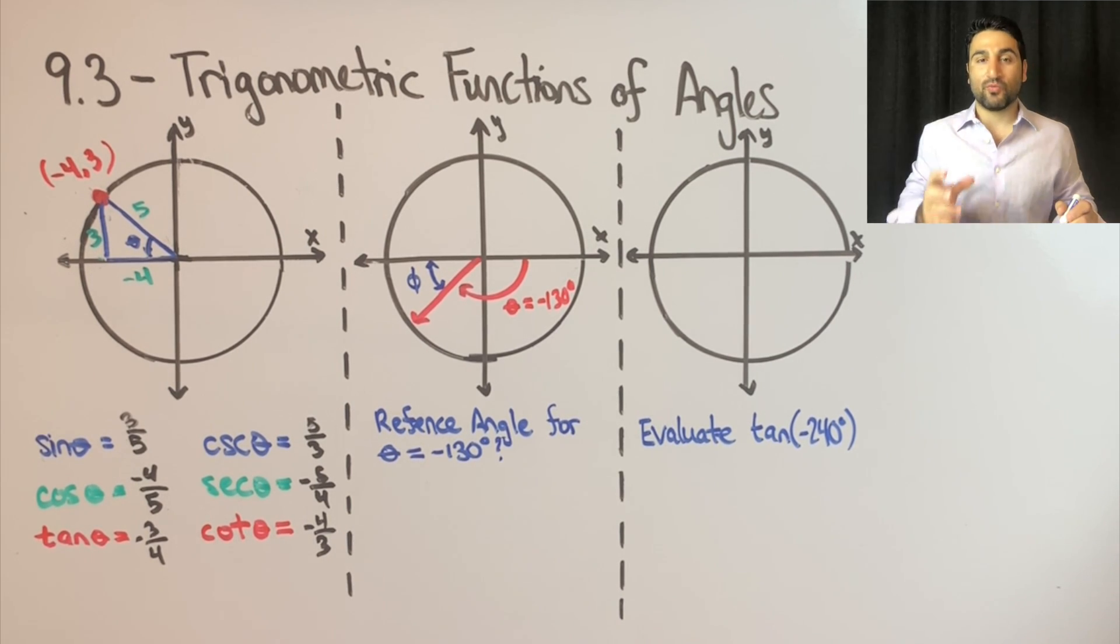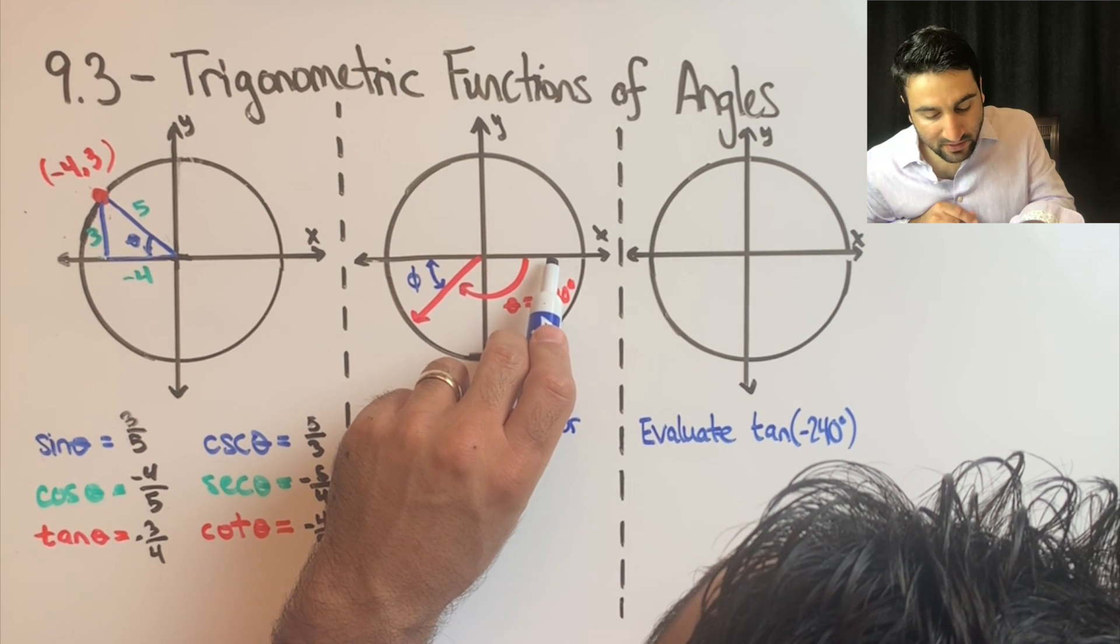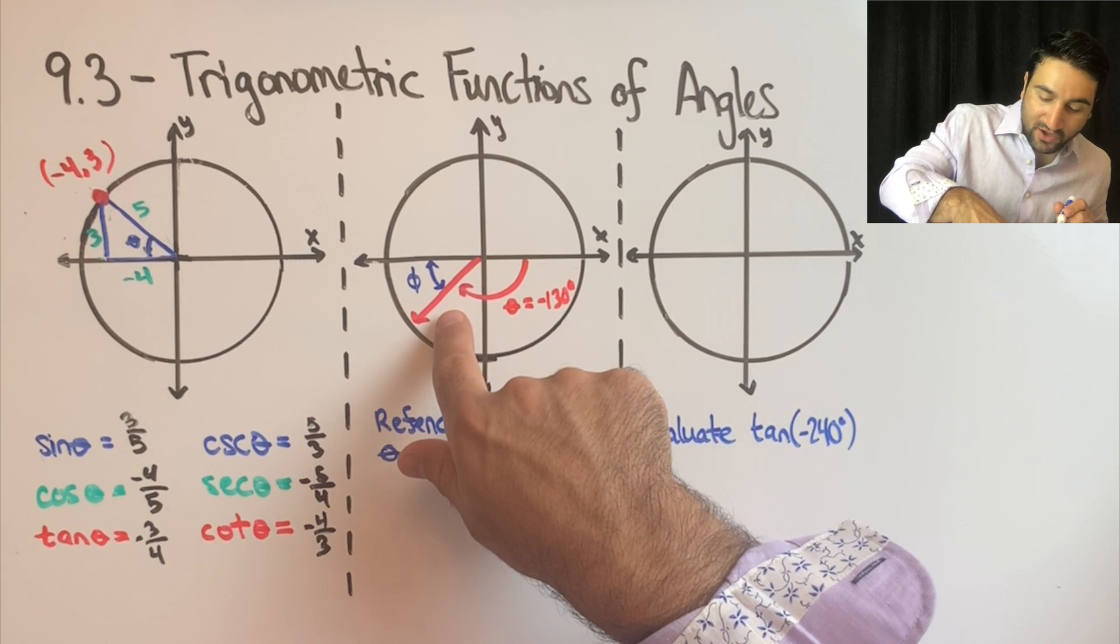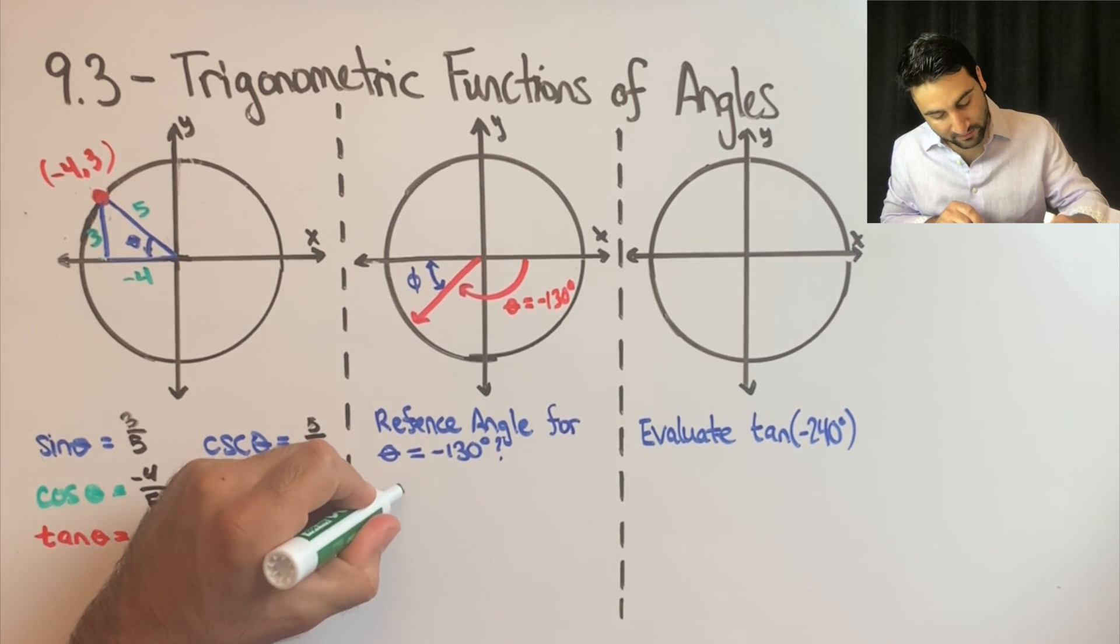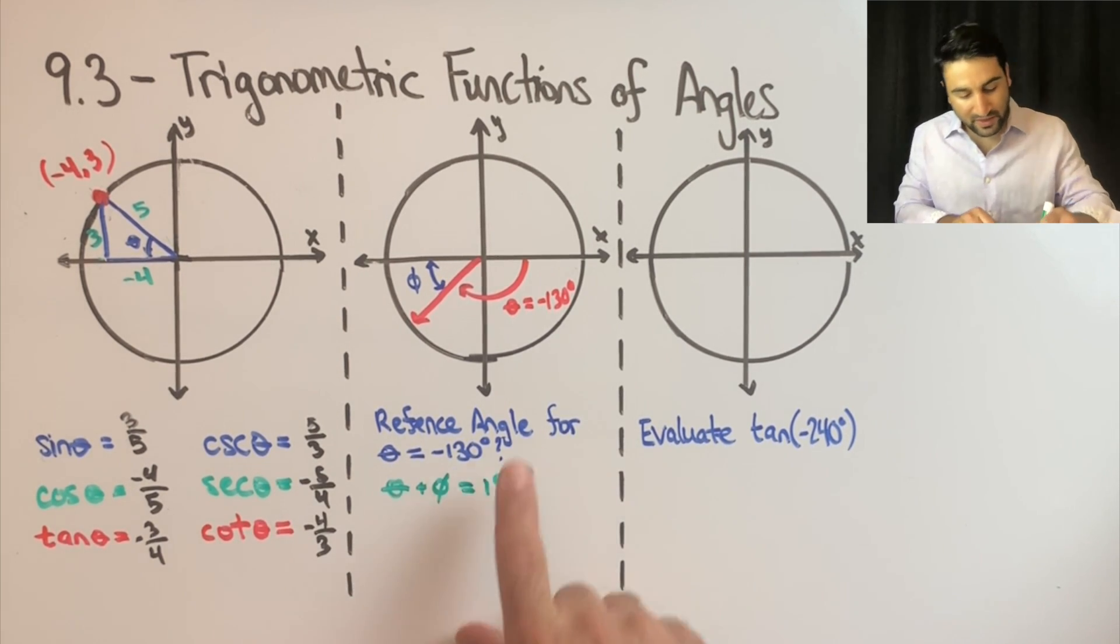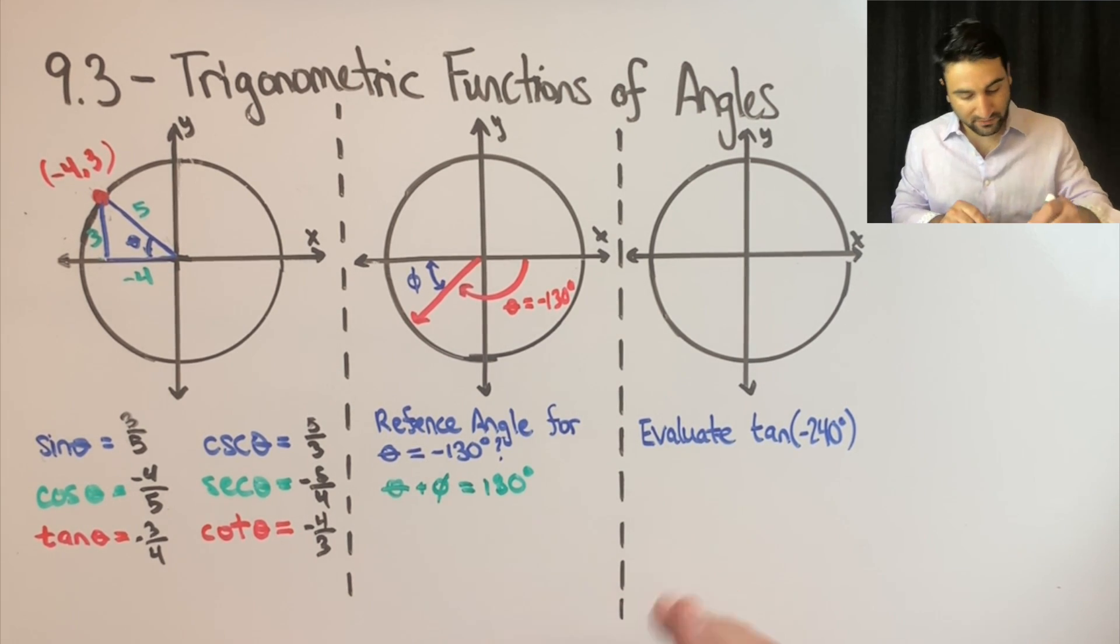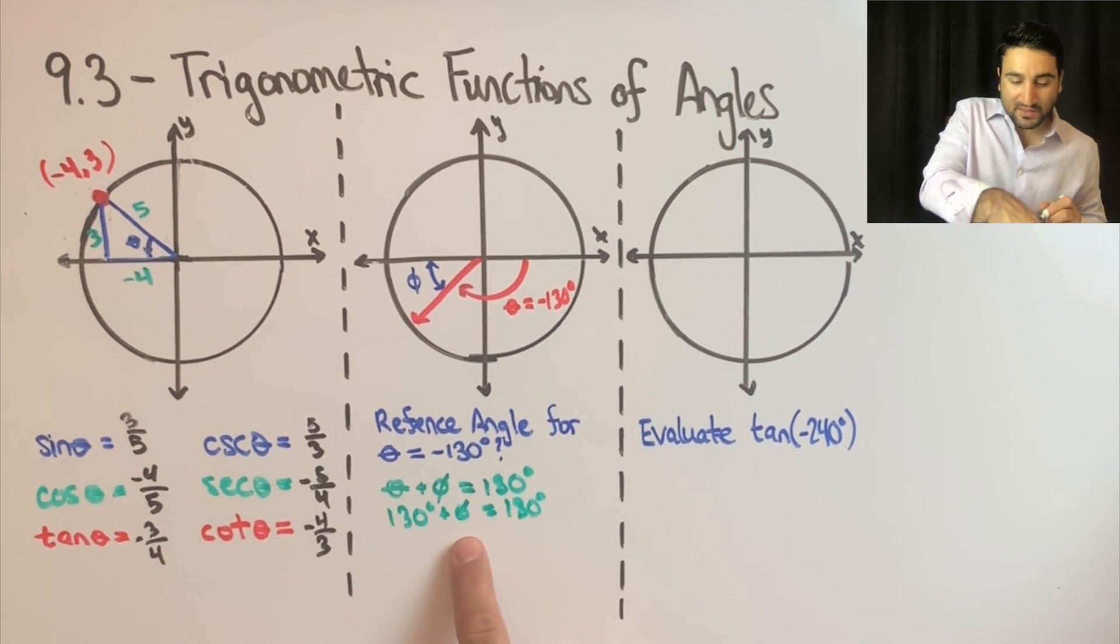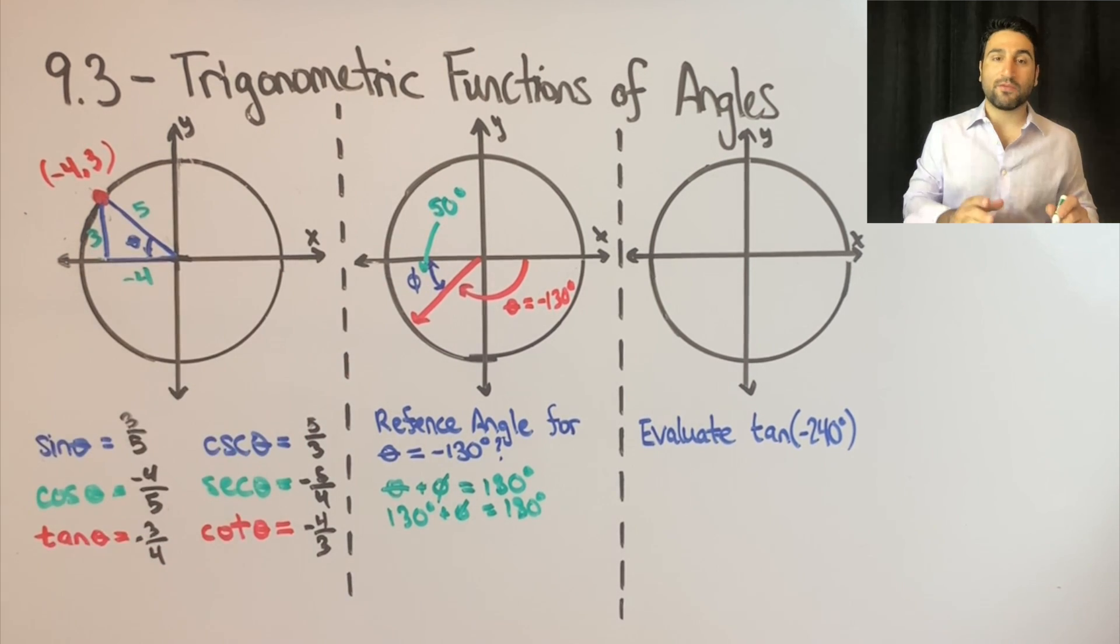Theta plus phi is what is considered the reference angle for this problem. So if you see here, the angle between here going halfway around the circle is 180 degrees. This portion is 130 degrees. So if theta plus phi is equal to 180 degrees, and we know that theta is 130 degrees, 130 degrees plus phi is equal to 180. That means that this remaining portion, this phi, has to be 50 degrees, which is the reference angle for this problem.